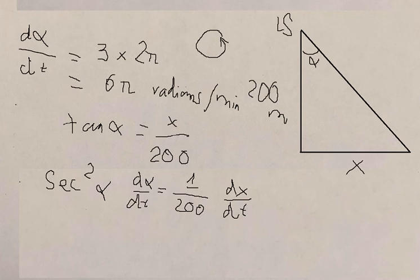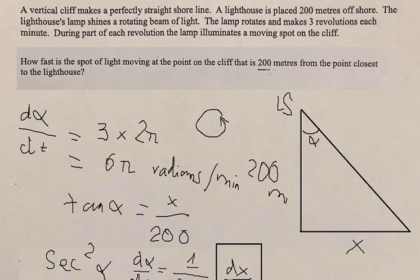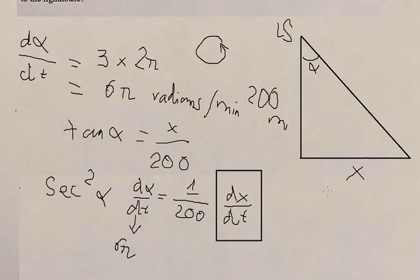So we want to find dx/dt. Let's see, we just input the numbers. This one we found is 6π. How about this one? 200. Let's see, 200 here. And we know that 200, 200, so α here is about 45 degrees.